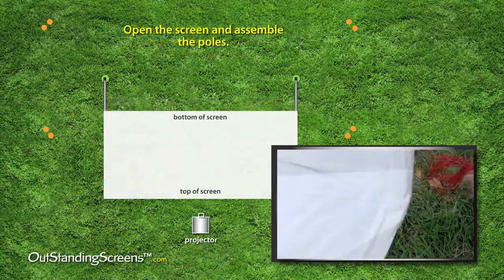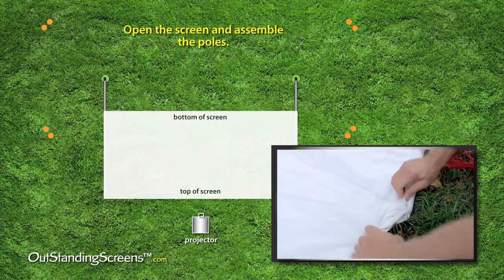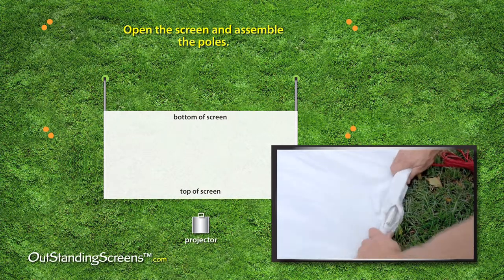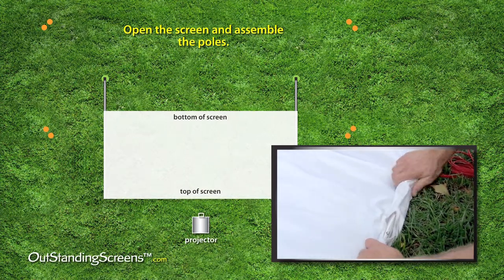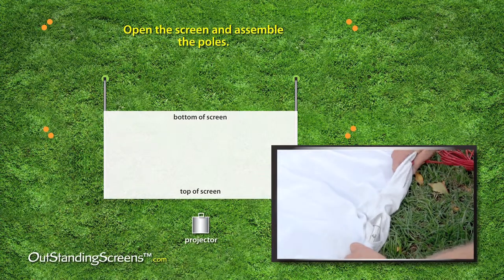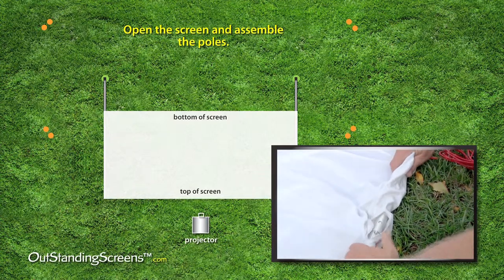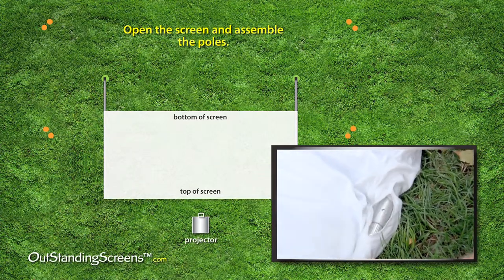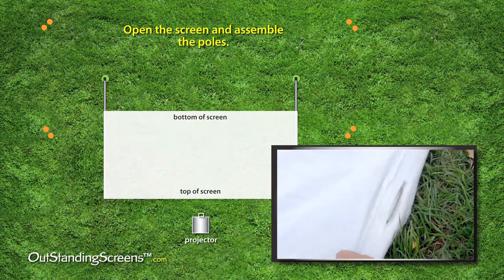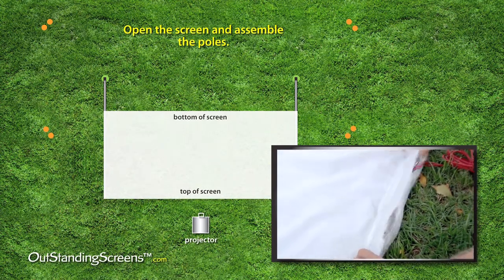Once the screen is open, the poles connect together with buttons to secure them. The feet of the poles are then placed where they will be standing once the screen is up.